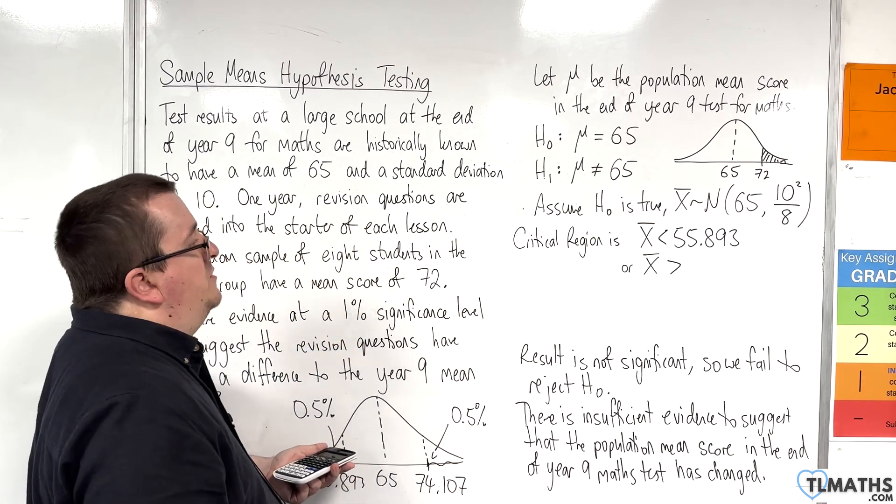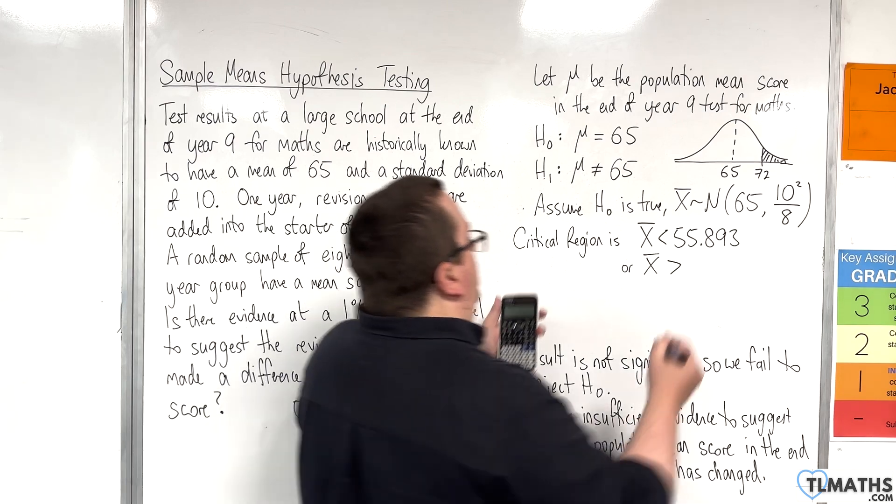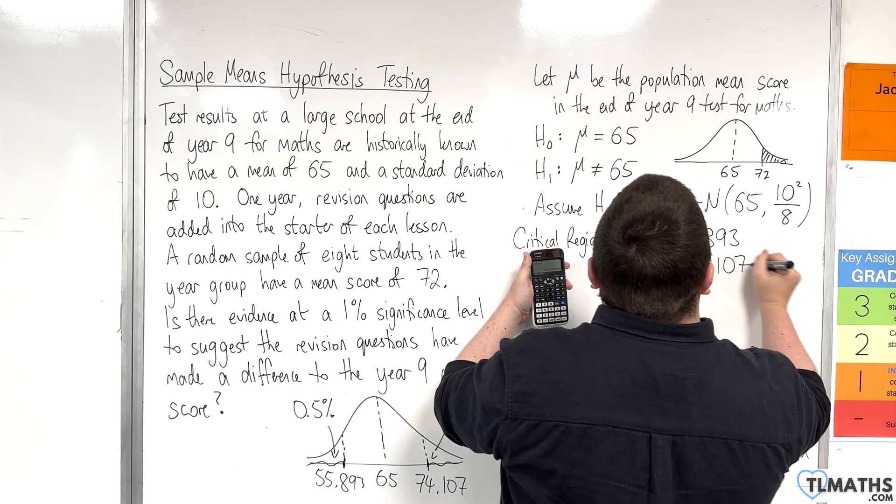And I get 74.1069. So, 1.07. Sorry, 74.107. So, 74.107.